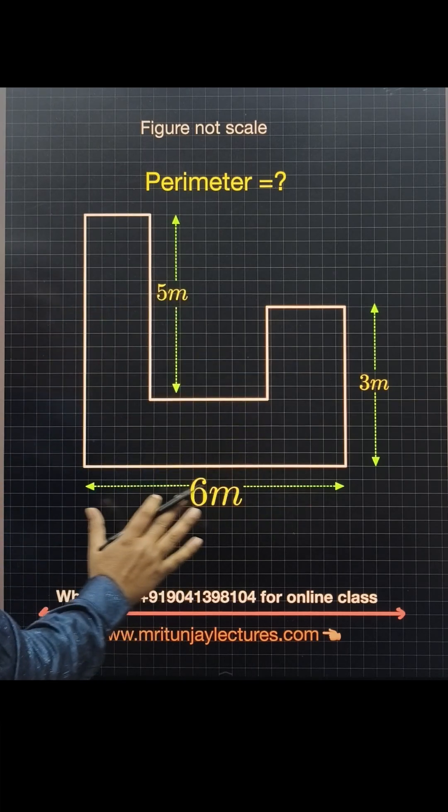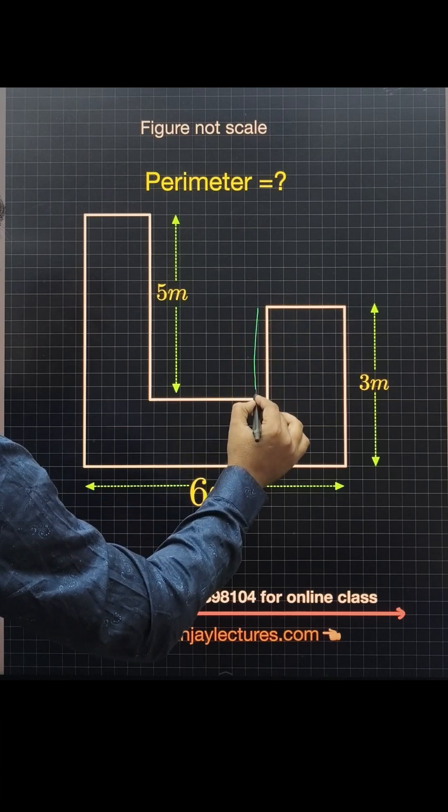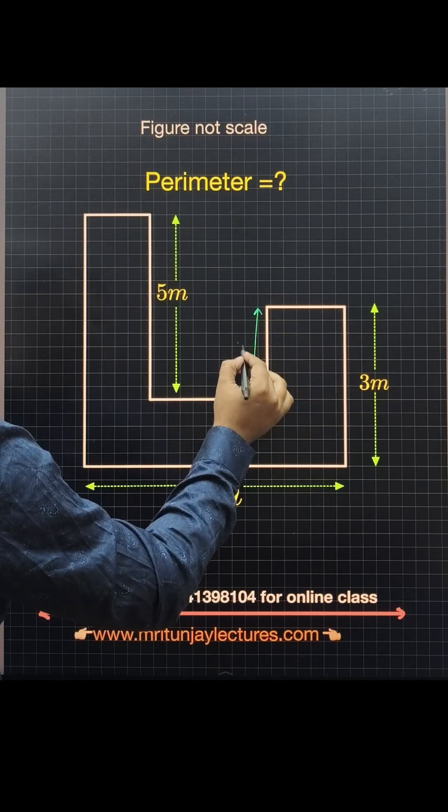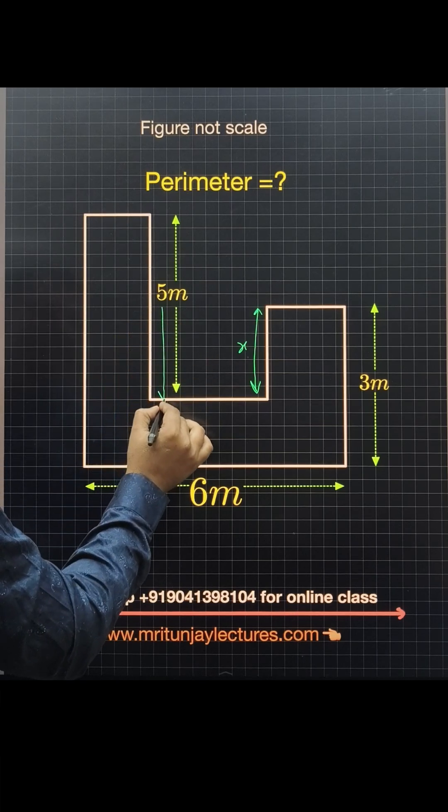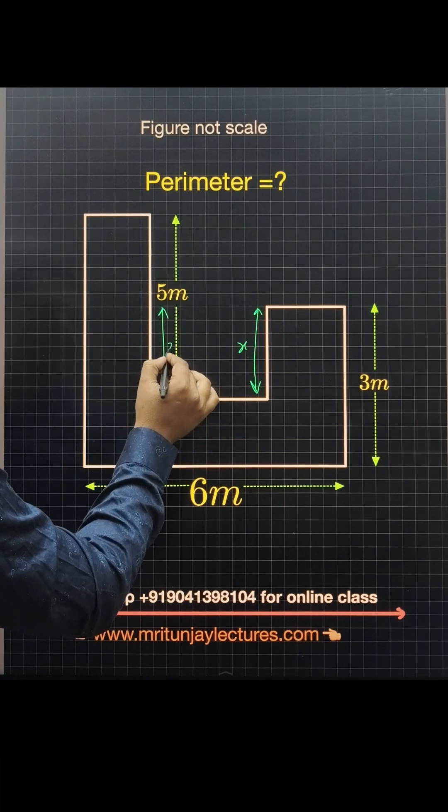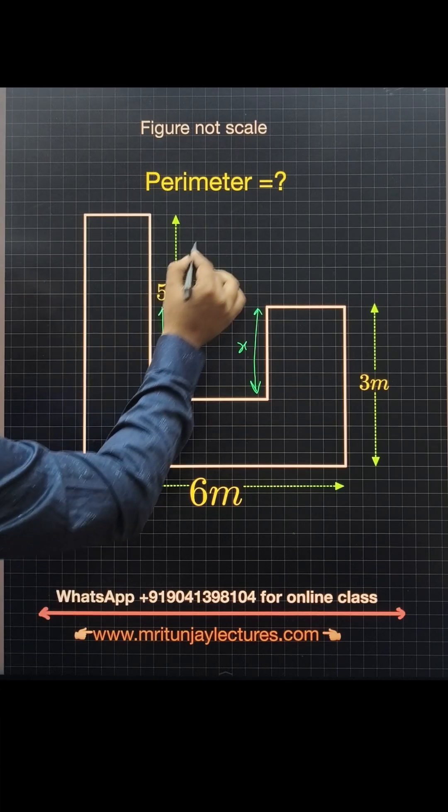Now, question of the day: how can we determine the perimeter of this diagram? Look very carefully. If this length is suppose x, then this distance is also x, clear?